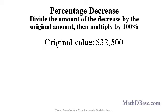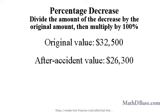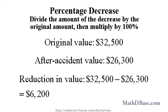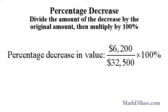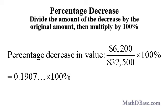Francine's boat was valued at $32,500 before the accident and $26,300 after. What was the percentage decrease rounded to one decimal place? The decrease in value was $32,500 minus $26,300 or $6,200. The percentage decrease was $6,200 over $32,500 times 100%, which is about 0.1907 times 100%, or 19.1% rounded to one decimal place.